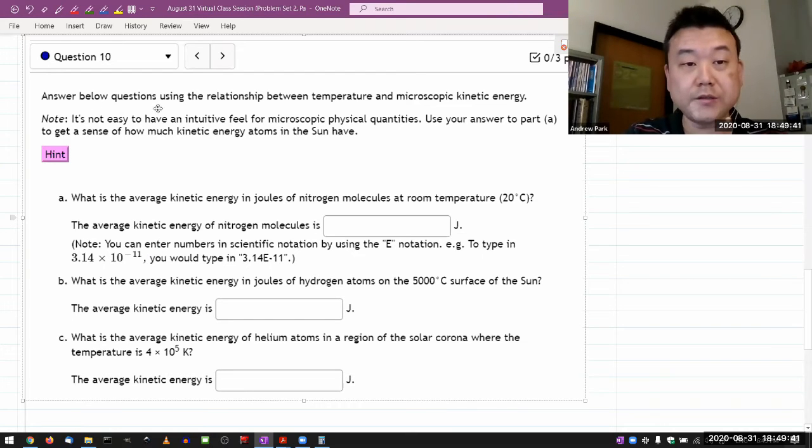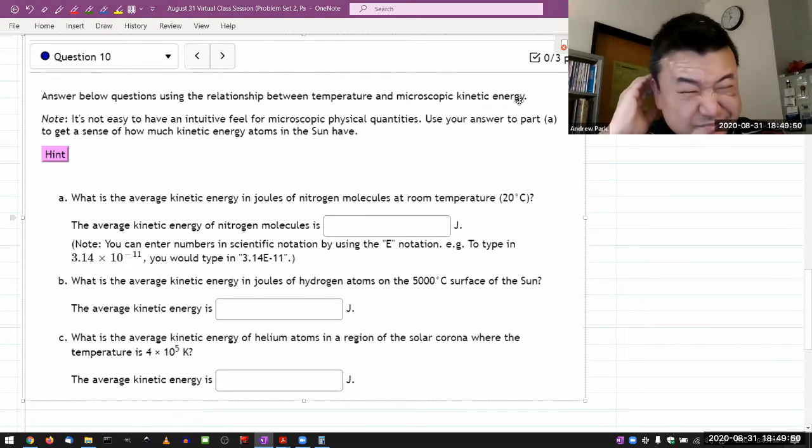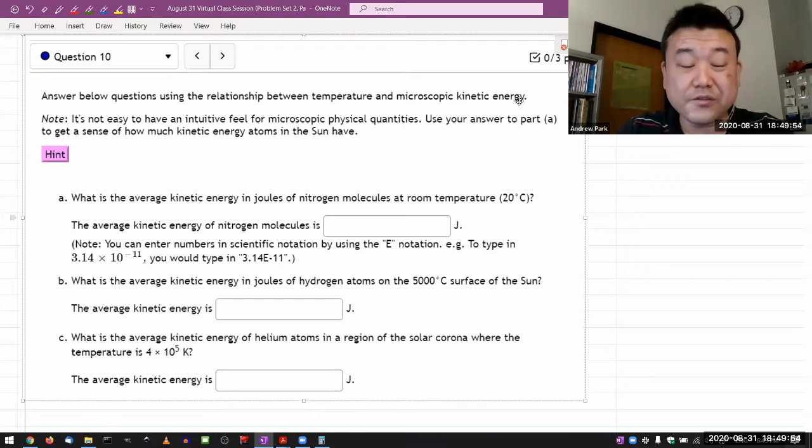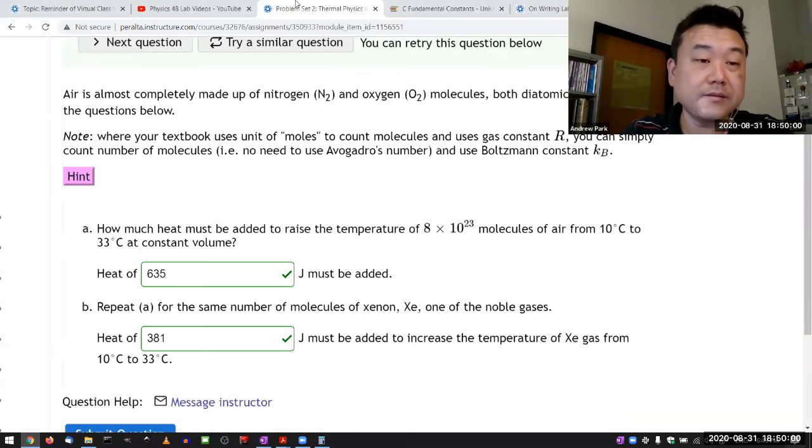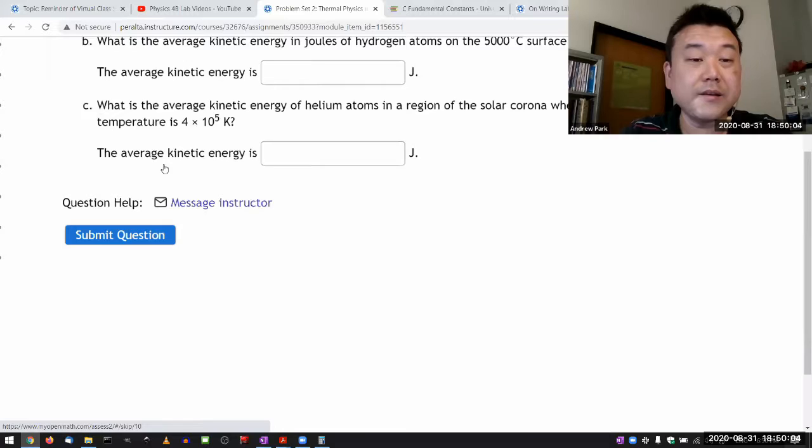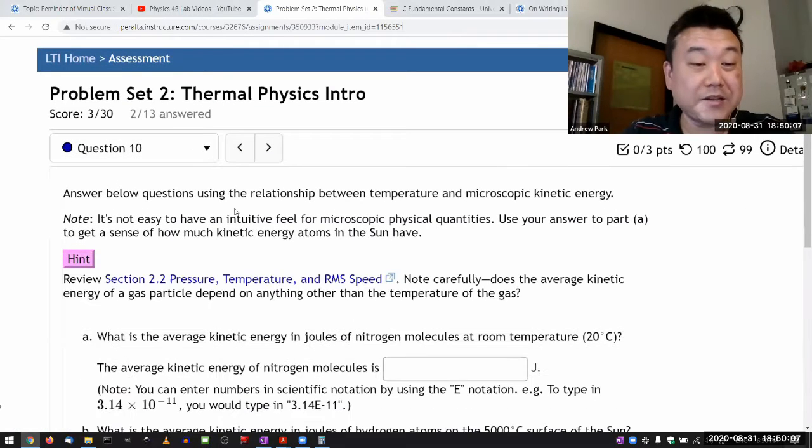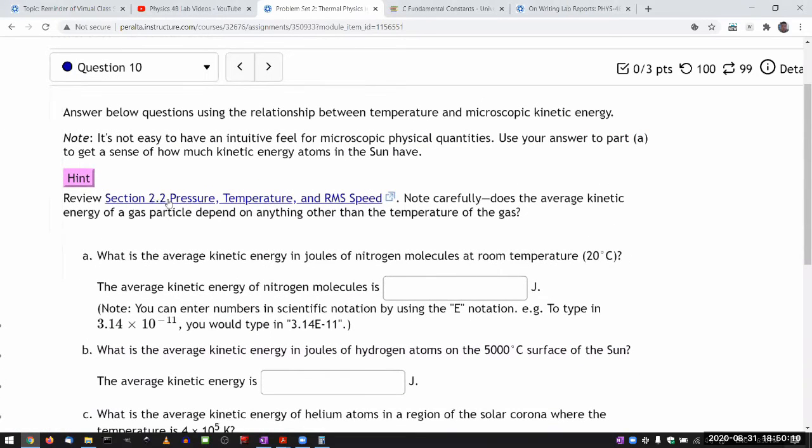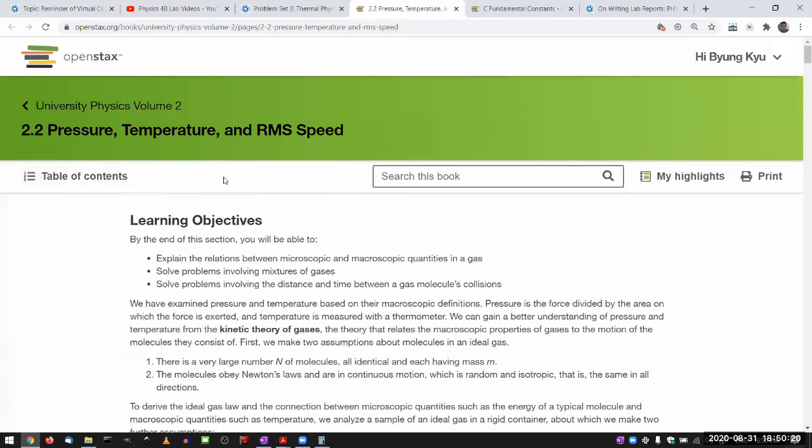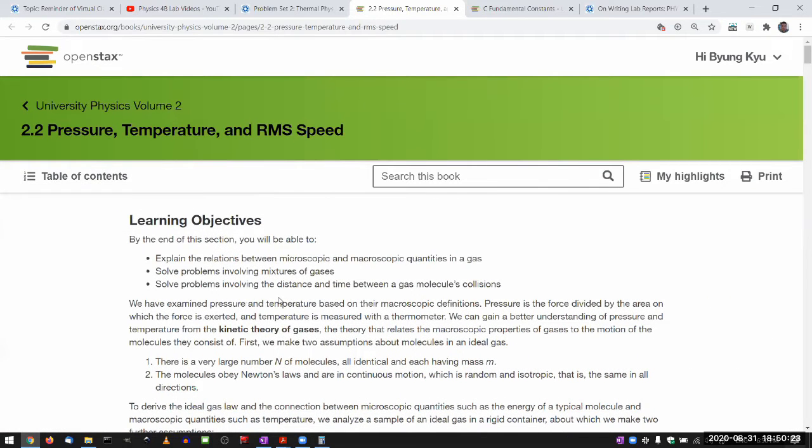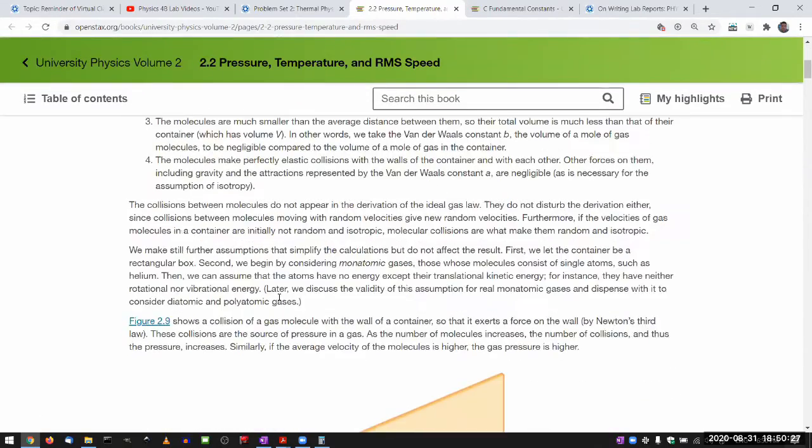It says, answer below questions using the relationship between temperature and microscopic kinetic energy. This is where a lot is really hidden into the hint. So let me go to the hint and load up what the hint says. The hint for question 10 links you to a different section of the textbook.